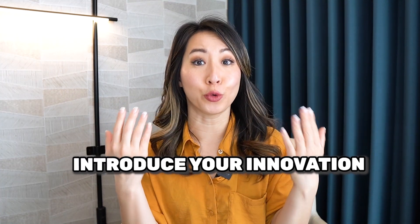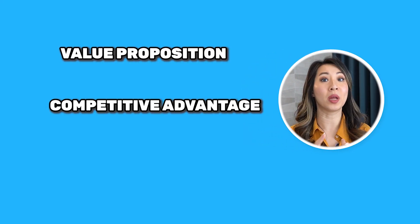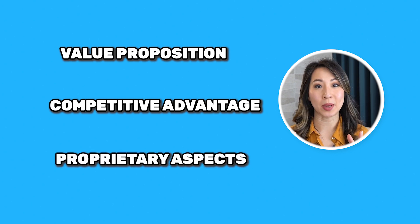Next, you want to introduce your innovation — your solution to solve that particular problem. Focus on conveying why your innovation or solution is unique and novel, and show how it represents a significant departure from existing technologies or methods. You can do that by emphasizing its value proposition, competitive advantage, or proprietary aspects of your technology. Don't forget to add a sentence explaining how your innovation addresses the problem you identified at the beginning of your Specific Aims draft. I also recommend including any preliminary data if available to help show the feasibility and effectiveness of your approach.